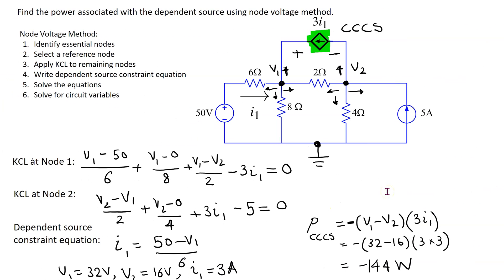In an earlier video we solved the same circuit using the node voltage method. Applying node voltage method required solving 3 simultaneous equations, while mesh current method required only 2 equations, yet both approaches yield the same power result of −144 W. Thus, for this circuit, the mesh current method results in lower complexity. This completes the solution to this problem.